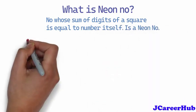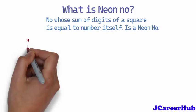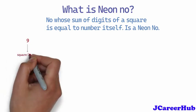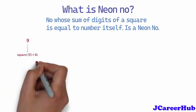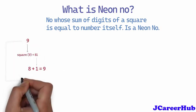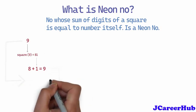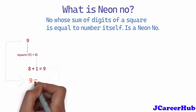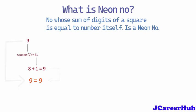Let's see an example. Number 9, its square is 81. If you calculate the sum, 8 plus 1 is equal to 9. Number 9 is equal to the sum of digits of its square, which is 9. So number 9 is a neon number.